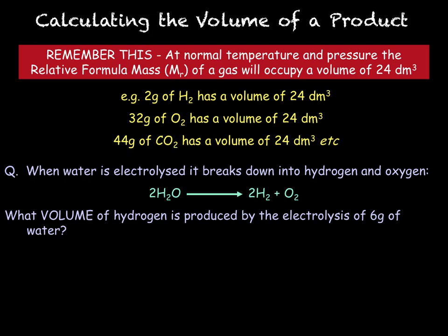When water is electrolyzed it breaks down into hydrogen and oxygen. Here is our reaction here: 2H2O goes to 2H2 plus O2. What volume of hydrogen is produced by the electrolysis of 6 grams of water?